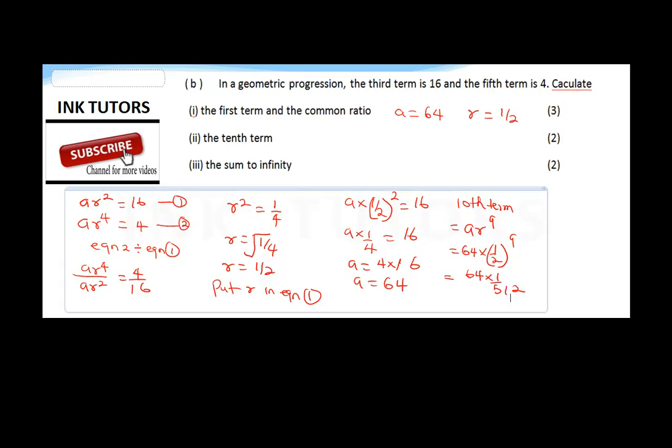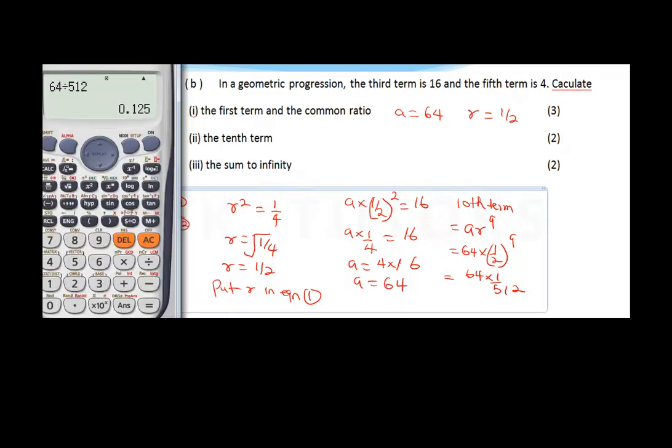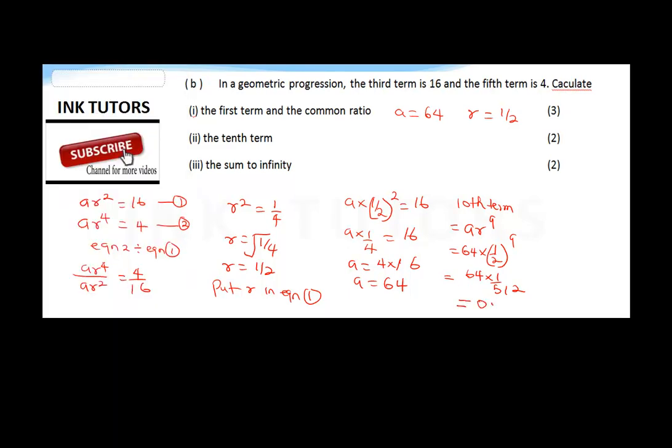Now, if you divide this with your calculator, we'll employ our calculator to divide it. So this is going to be 64 divided by 512. So our answer is 0.125. The 10th term is going to give us 0.125.